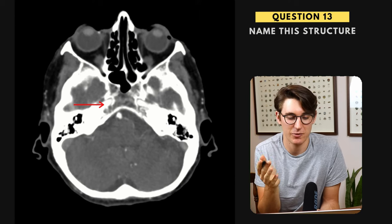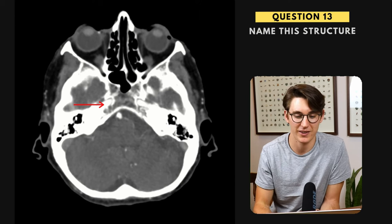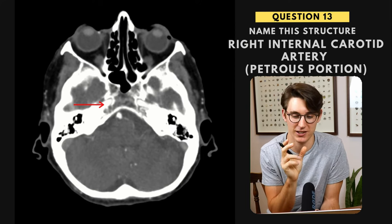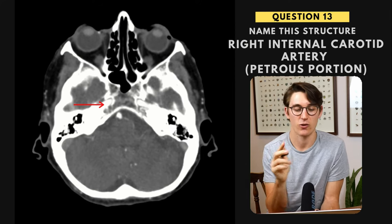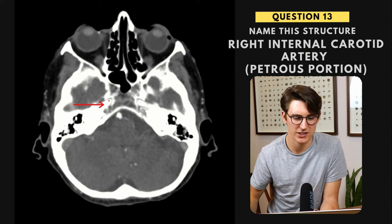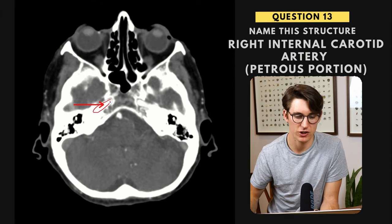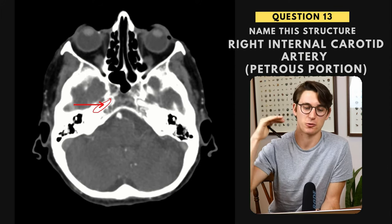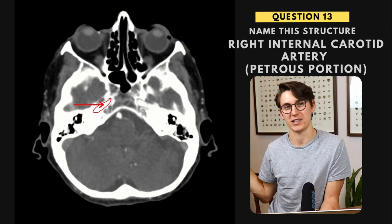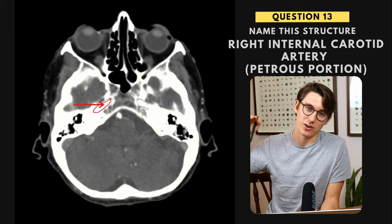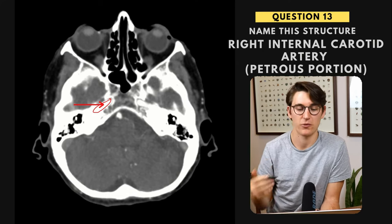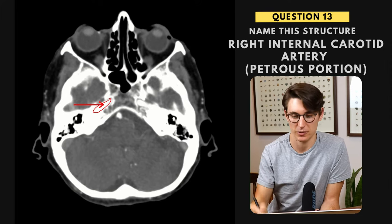Question thirteen — this is another vessel, our right internal carotid artery. The section we are labeling here is the petrous portion running through the petrous bone. We previously labeled the carotid canal, and now the carotid has come up through that and is running anteriorly in a horizontal plane through the petrous bone before it extends up into the cerebrum.